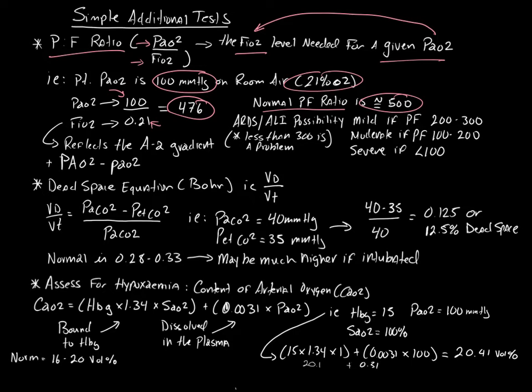A normal PF ratio is about 500. If it's between 200 and 300, that is mildly altered. 100 to 200 is moderately altered, and less than 100 is severely altered. Generally speaking, if you're in the range of about less than 250, you need to be thinking about ARDS. Does your patient have ARDS, or are they developing ARDS?